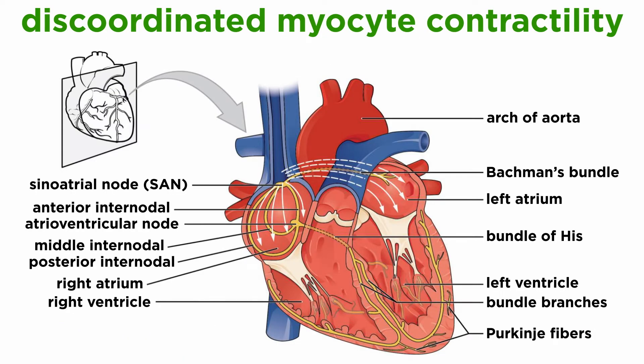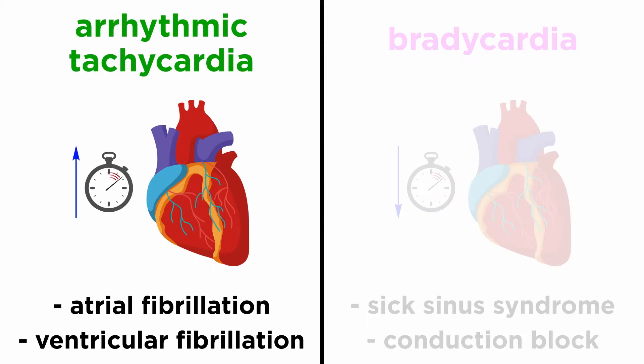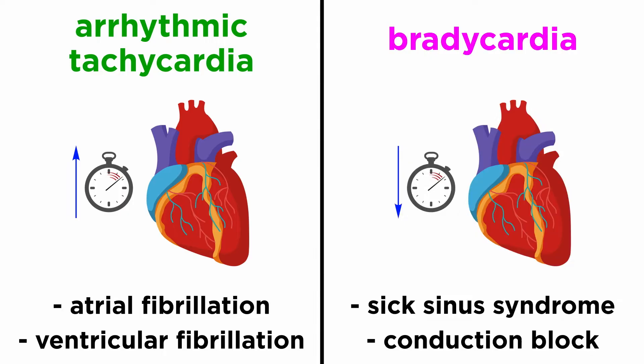But more important than the heart rate is the discoordination of myocyte contractility. Some important examples include atrial fibrillation and ventricular fibrillation as examples of arrhythmic tachycardia, as well as sick sinus syndrome and conduction block as examples of bradycardia, but there are many others.